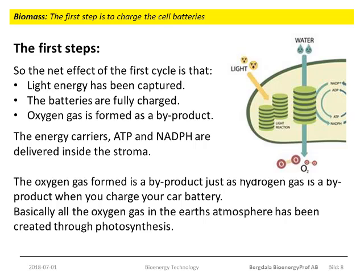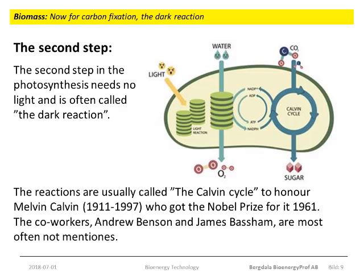The two energy carriers, ATP and NADPH, are delivered inside the stroma, while the byproduct oxygen gas diffuses out of the cell. Once the two main energy-carrying compounds in the cell machinery are fully charged by sunlight energy, then it is time for the next step. This step — the dark reaction — but it has nothing to do with the dark side in the Star Wars films, is driven by the chemical energy in the two carriers and needs no light. The most common name for this second step is the Calvin cycle.